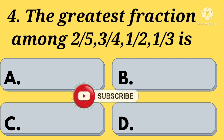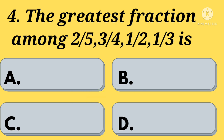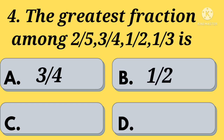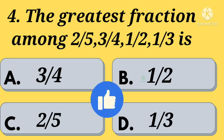The greatest fraction among 2 by 5, 3 by 4, 1 by 2, 1 by 3 is — Option A: 3 by 4. Option B: 1 by 2. Option C: 2 by 5. Option D: 1 by 3. Your time starts now.